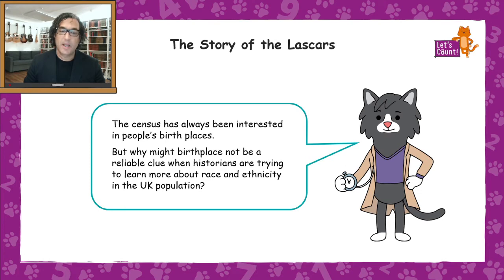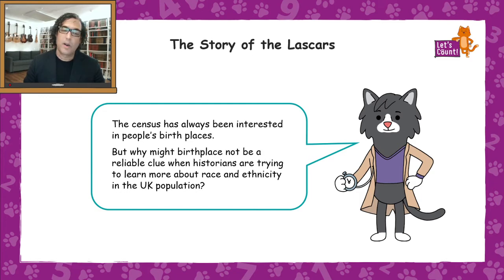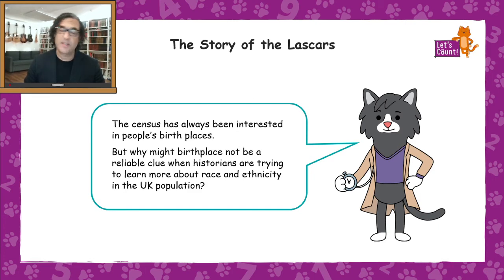The census has always been interested in people's birthplaces. But here's Doc's question: why might the birthplace of someone not be a reliable clue when historians are trying to learn more about their race and ethnicity in the UK population?